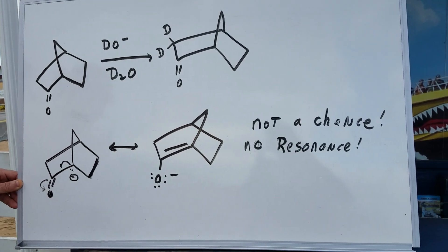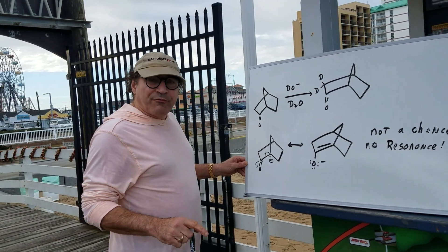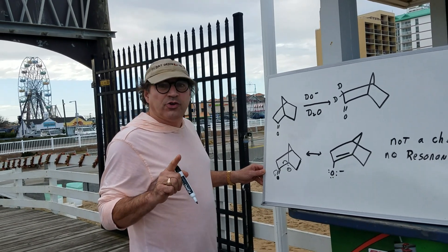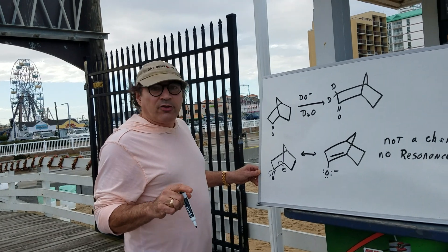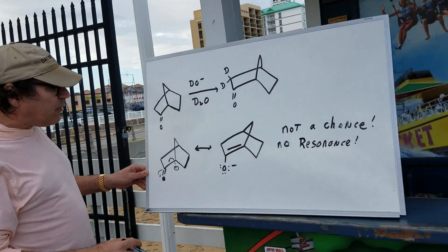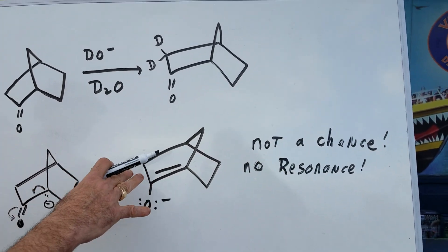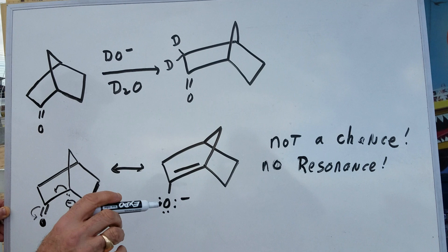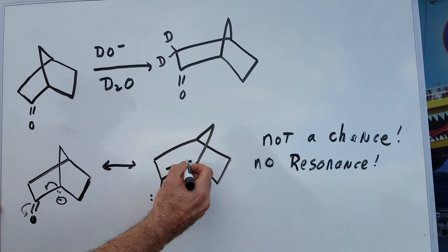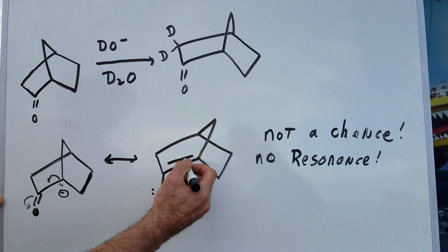One thing a good friend of mine, Professor Maylin Jones — he's emeritus professor of organic chemistry at Princeton — always used to tell me: many, many times the blackboard loves to tell a lie, and that's exactly what's happened here. It looks like on the blackboard I was able to do resonance, but not a chance.